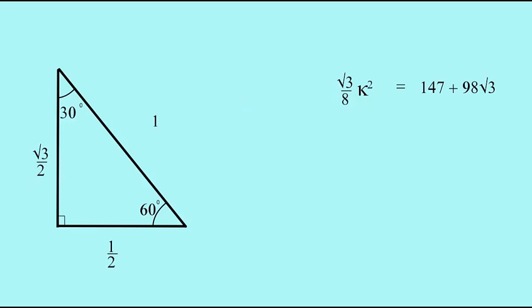We'll then multiply 147 + 98√3 by the reciprocal of √3/8. That multiplication gives us (1176 + 784√3)/√3.